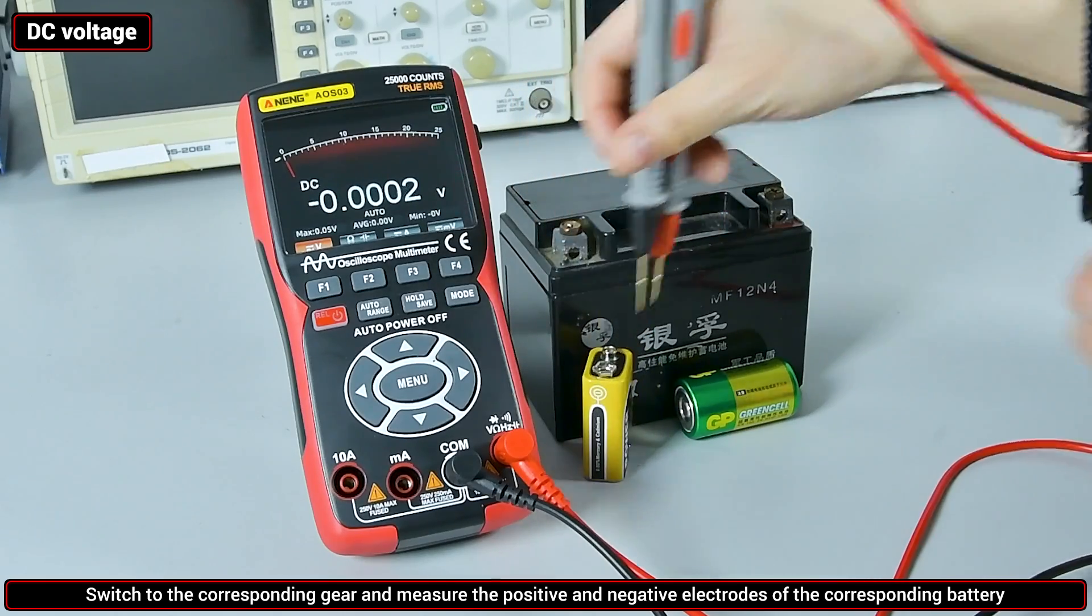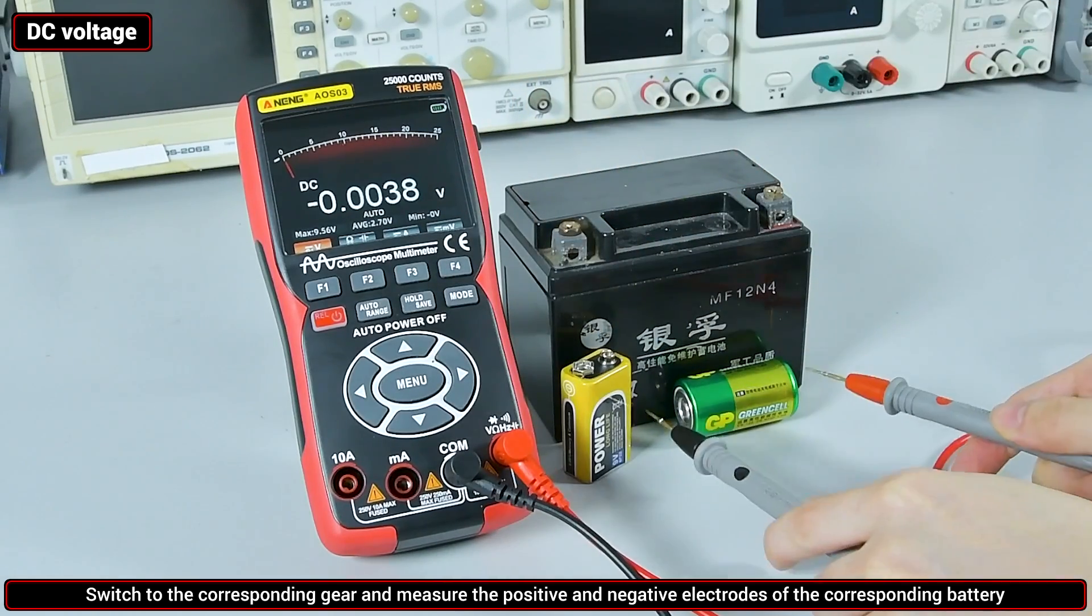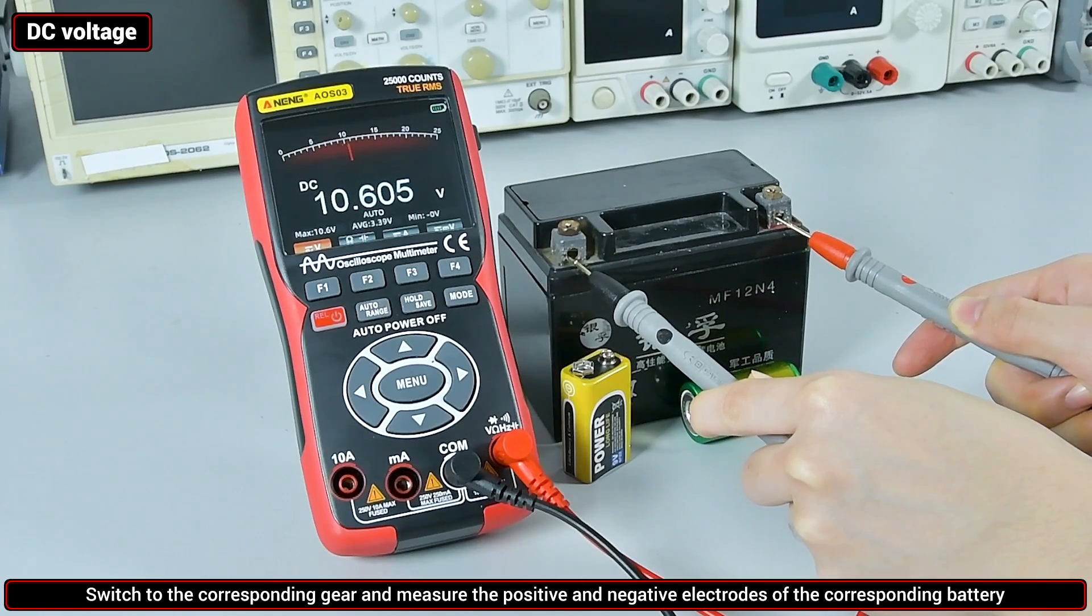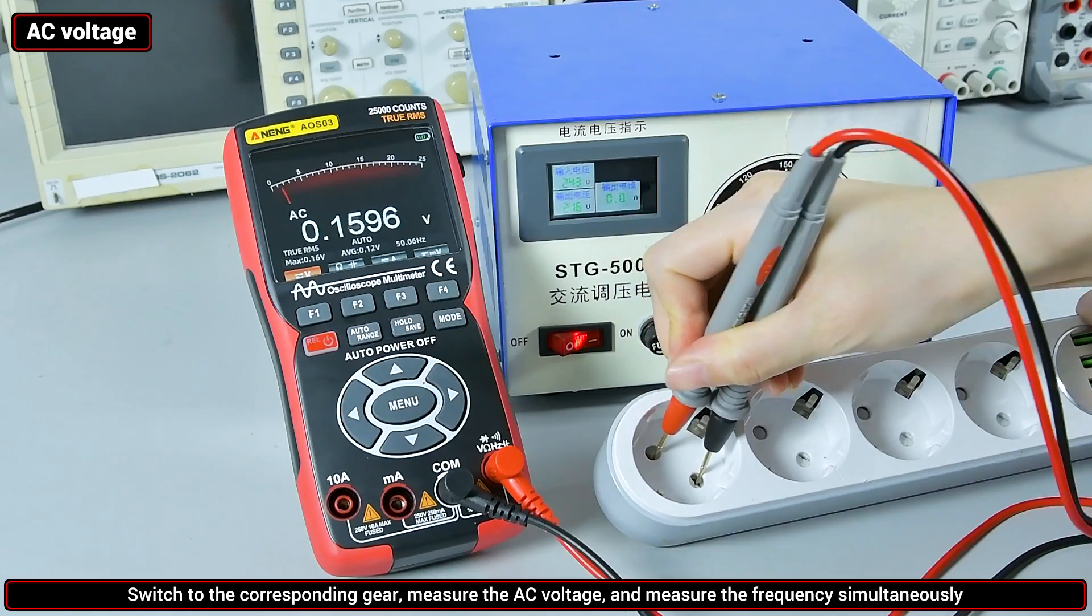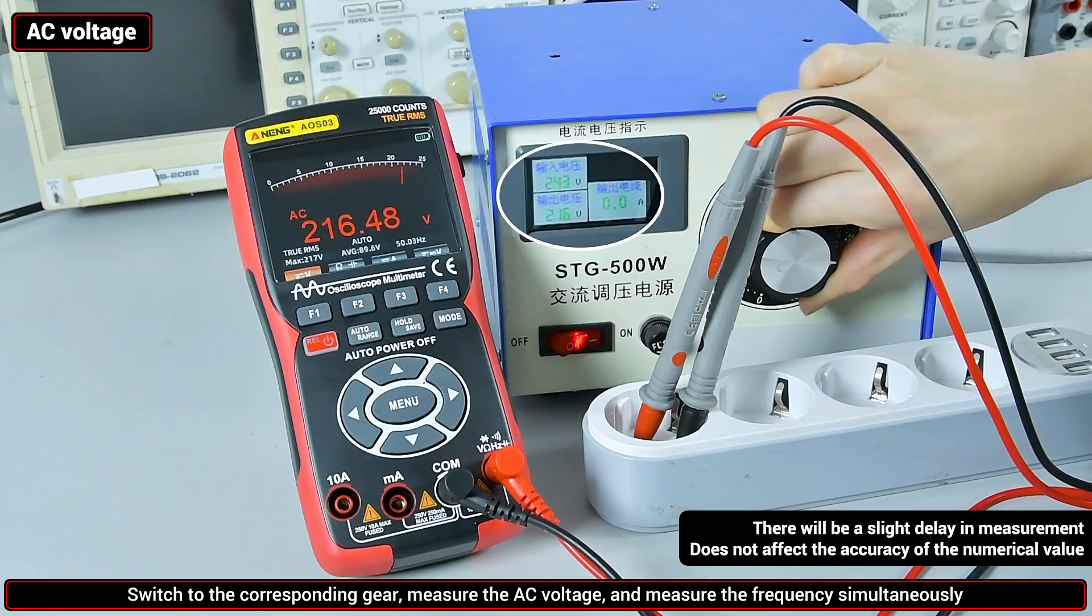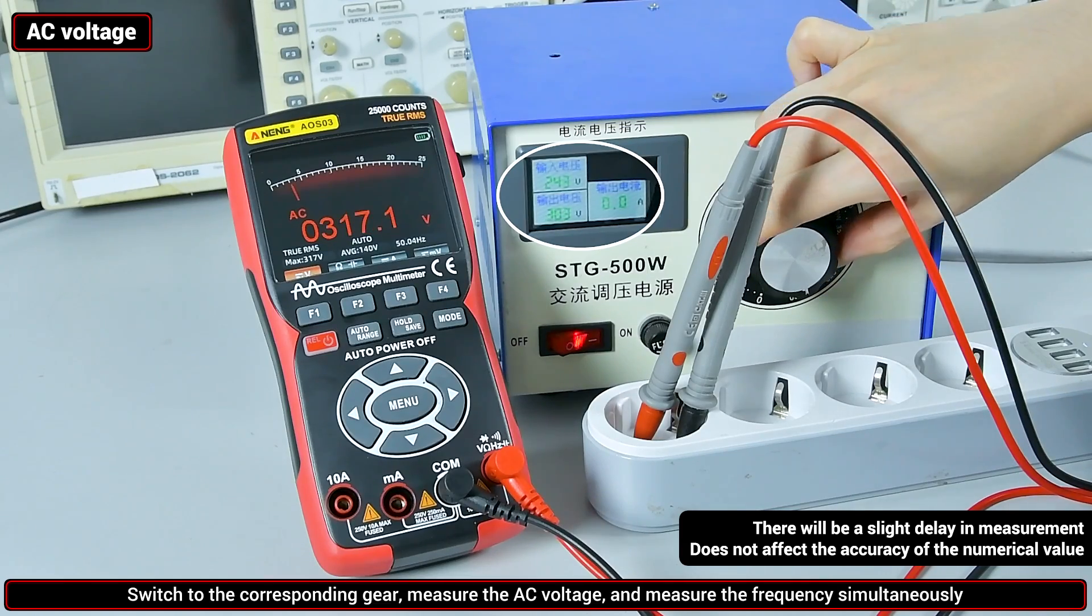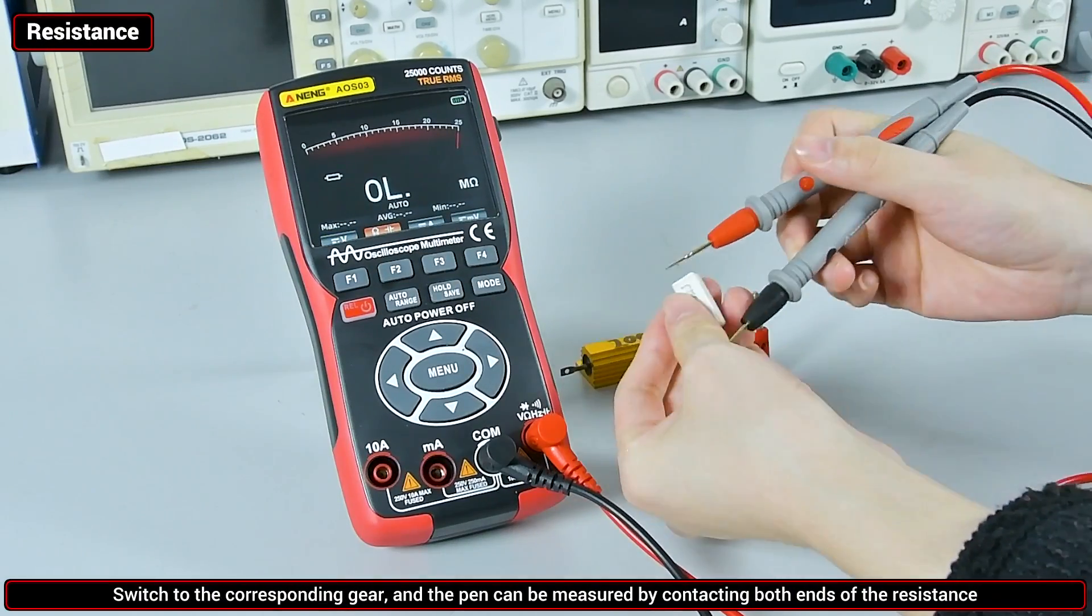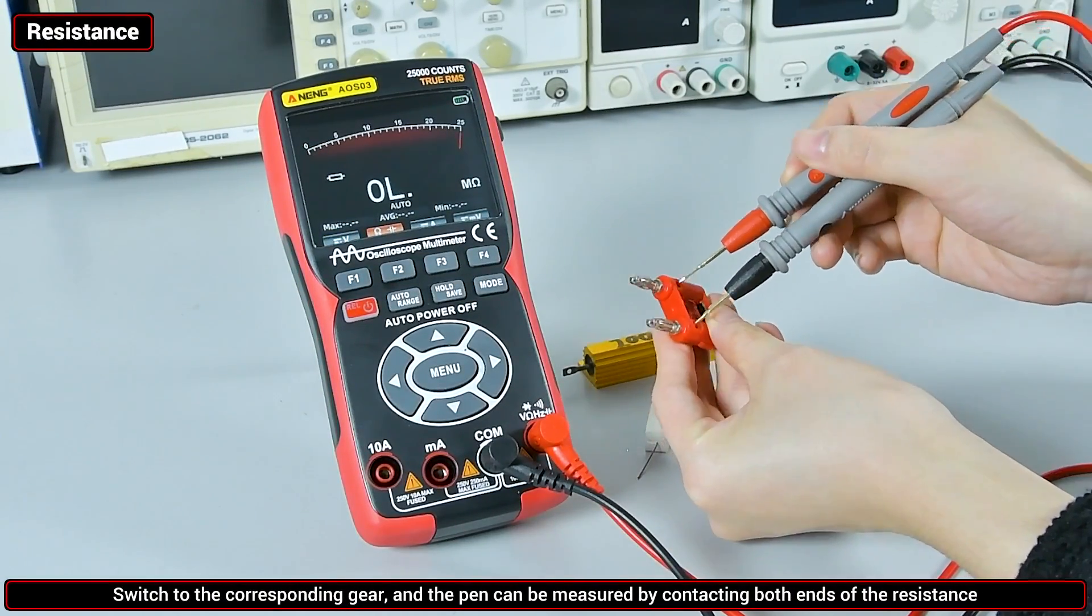Switch multimeter mode. DC voltage: switch to the corresponding gear, measure the positive and negative electrodes of the corresponding battery. AC voltage: switch to the corresponding gear. The average household AC voltage is around 220V. Measure the frequency value simultaneously. Resistance: switch to the corresponding gear. The pen can be measured by contacting both ends of the resistance.